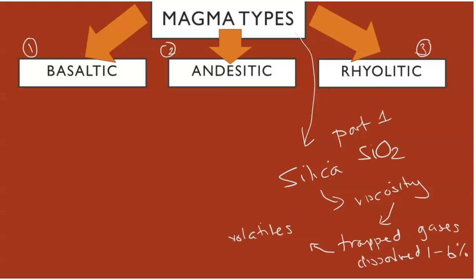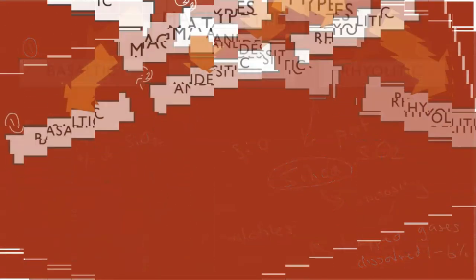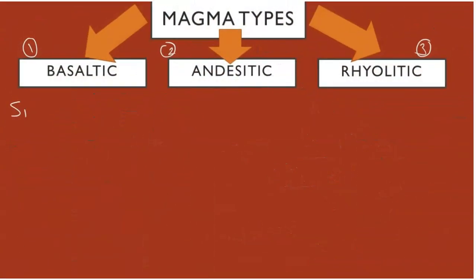Silica is an important component, made of silicon and oxygen. Based on where the magma forms, it will dictate the percentage by weight of silica, which in turn affects the characteristics. We're going to add in SiO2 for each of the three types.